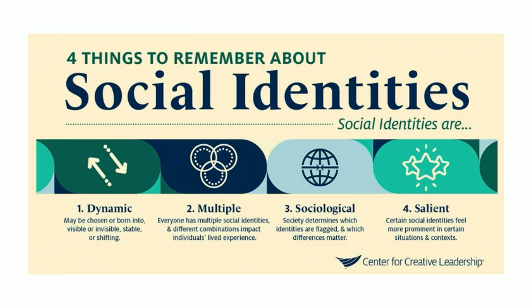Just as people have social identities, learners have learner identities that affect their behavior in different educational environments. To prepare learners for small group discussion, it can be helpful to explicitly talk about this: what do you consider a good discussion? How do you behave in a small group? How do you expect others to behave? Depending on the identity of the group members, answers may differ, and it can be helpful to use this as a strategy for learners to set ground rules together.